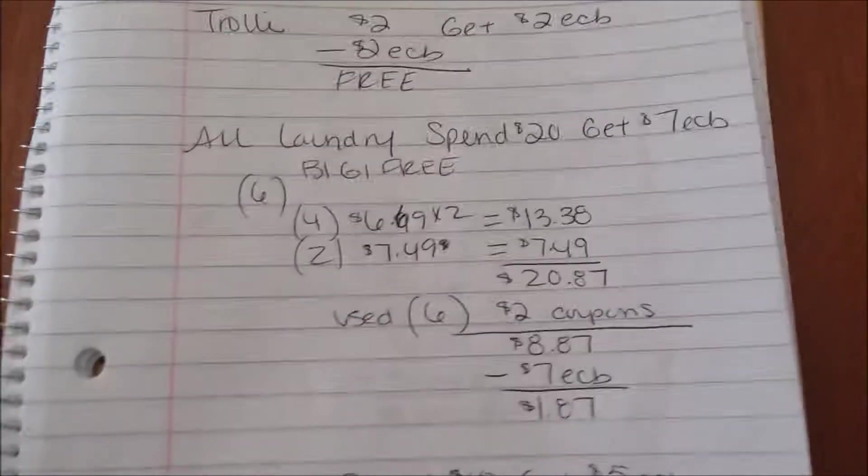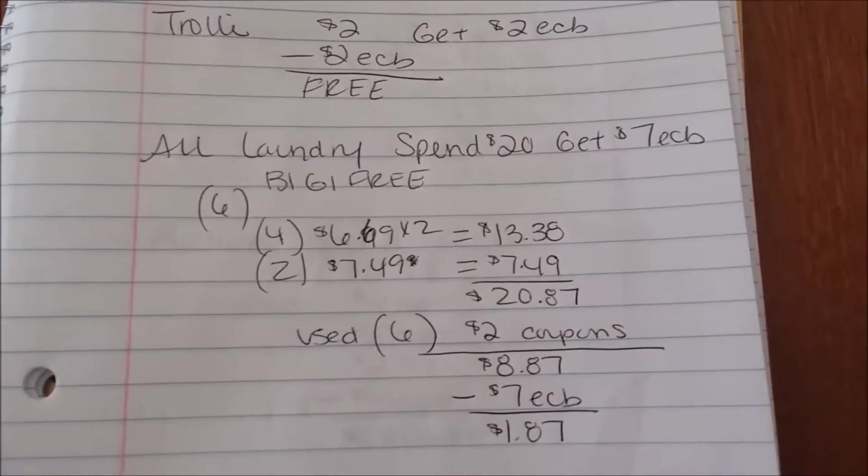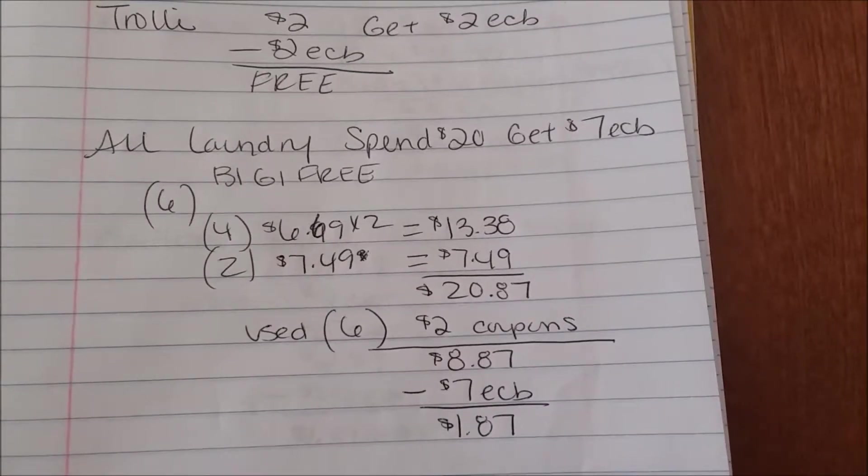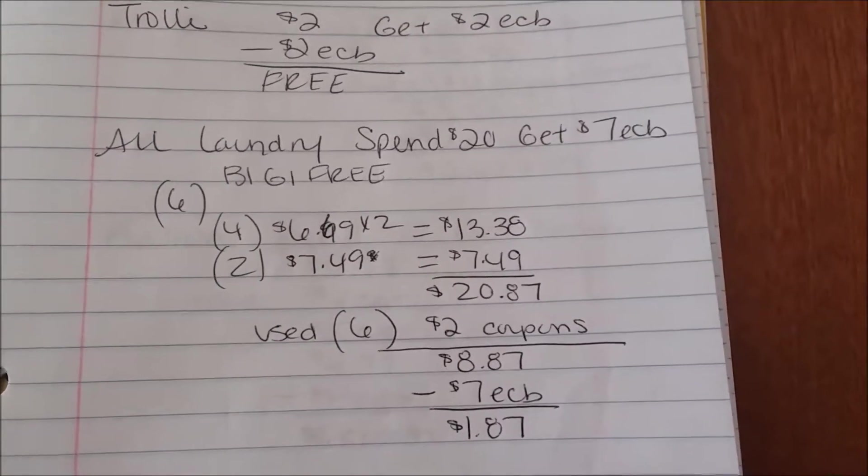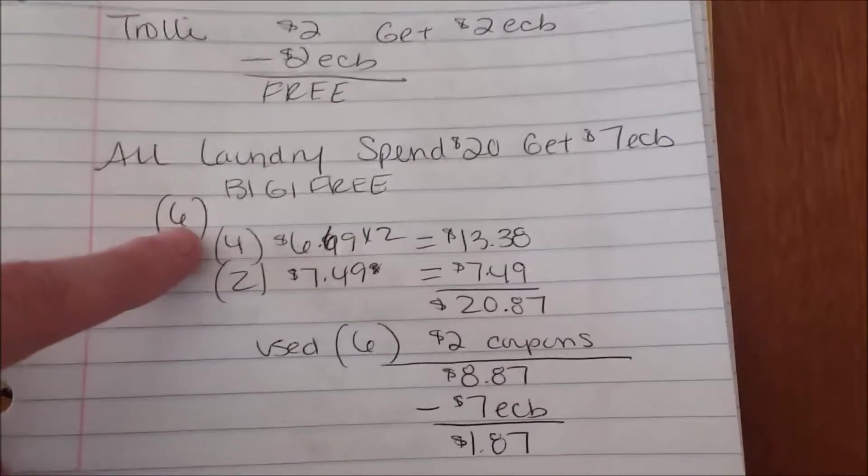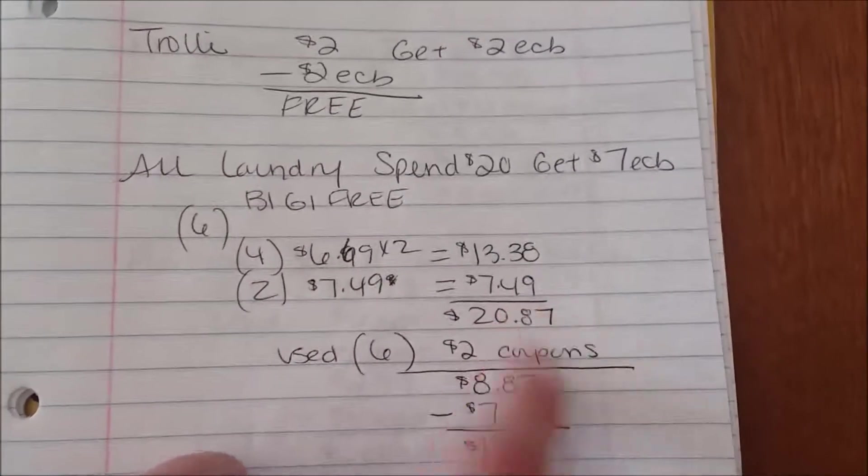Moving on to the laundry soap which is an amazing deal for six of them. The All laundry soap is part of a spend 20 get seven ECB. They're on sale for buy one get one free. So I picked up six. I picked up four, two were priced at $6.69 which brought it to $13.38. And I picked up another two which one was priced at $7.49.